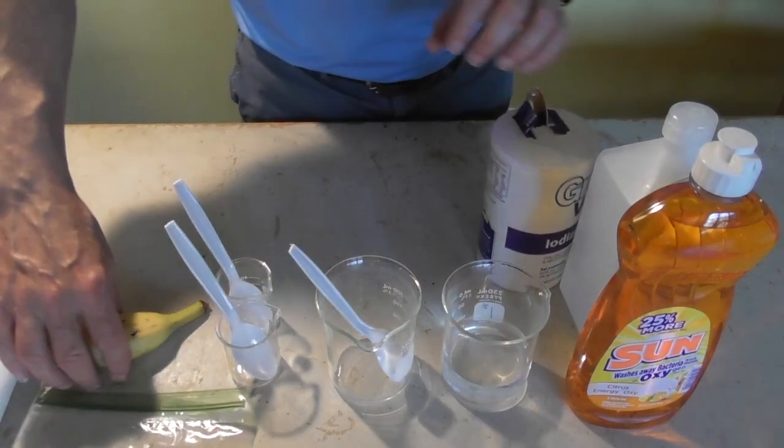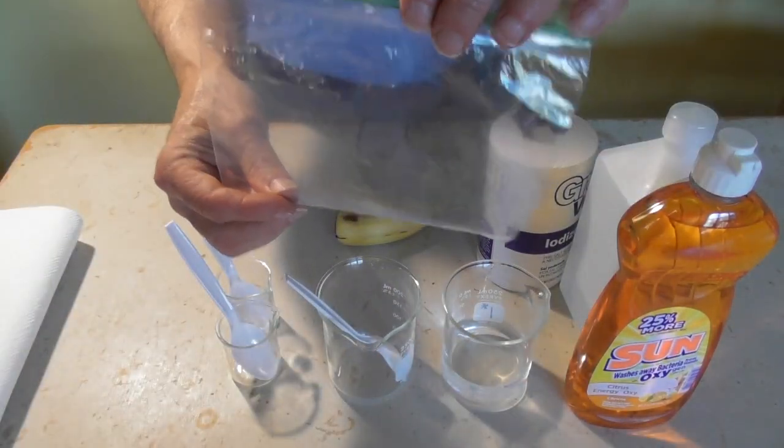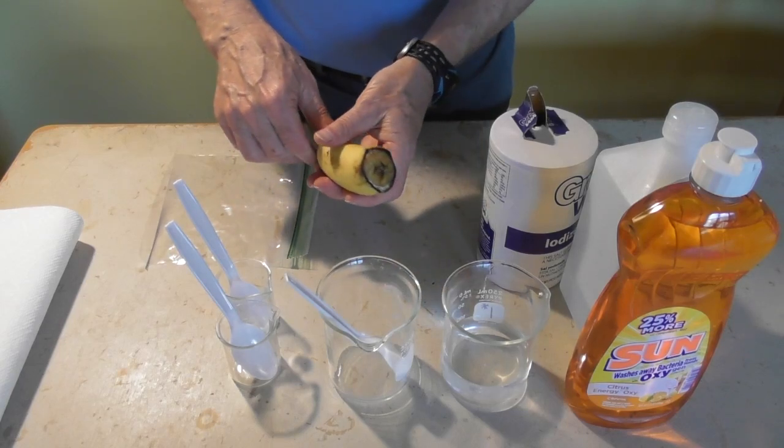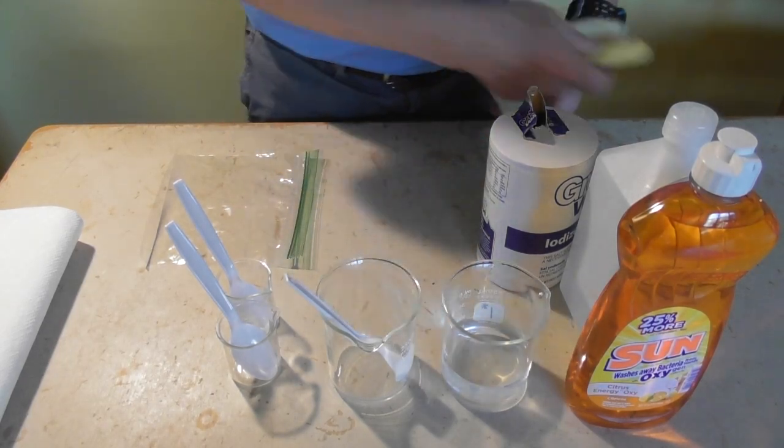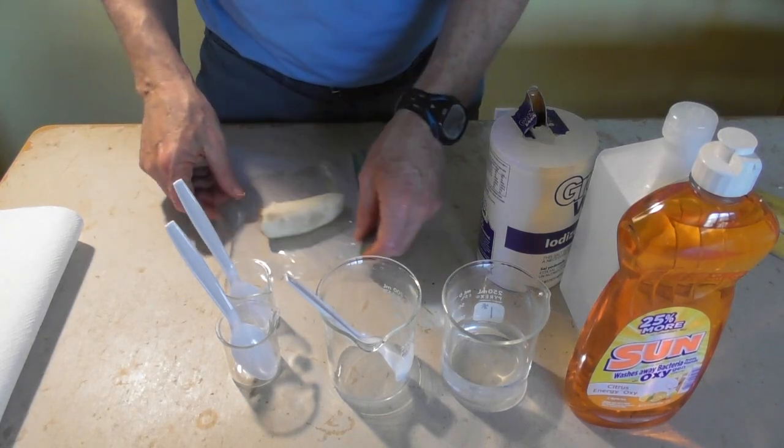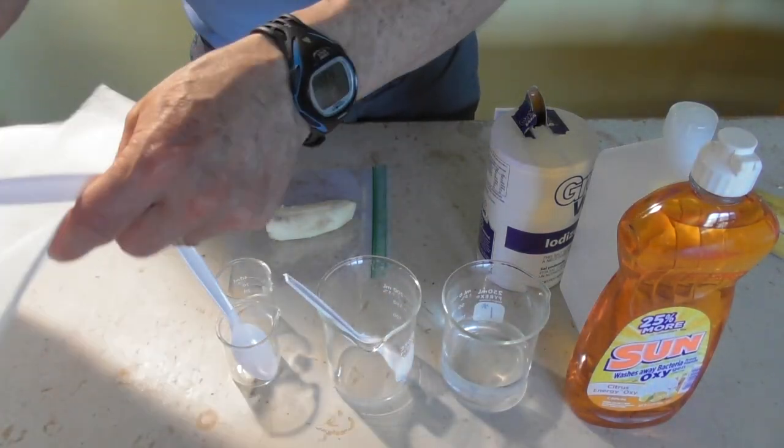So the first thing we need to do is go ahead and get a banana. And I have found over the years the easiest thing is just to use a plastic bag, go ahead and peel the banana. And then you don't really even need a knife for this. You can place it on a paper towel if you care to.